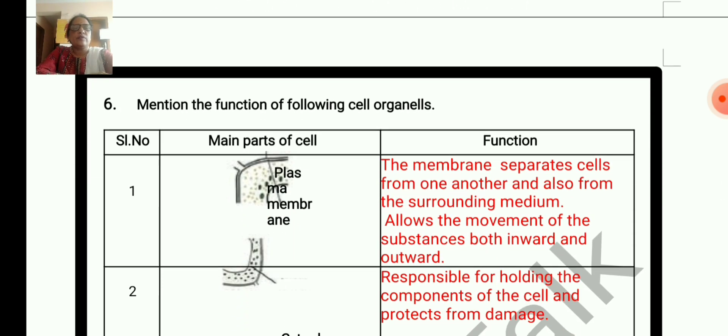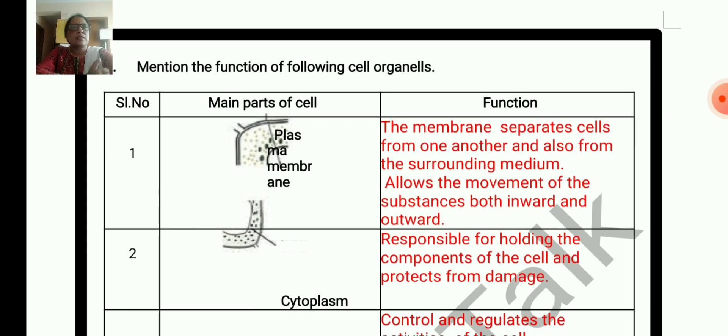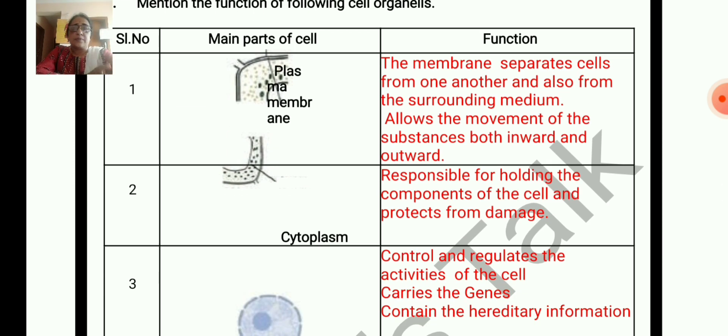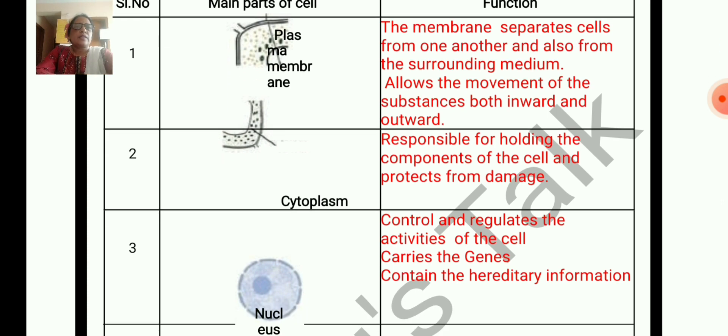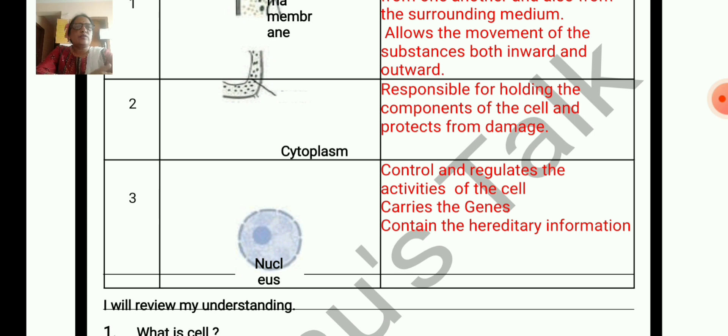Mention the function of following cell organelles. Plasma membrane: the membrane separates cells from one another and from the surrounding medium, allows the movement of substances both inward and outward - gases like carbon dioxide and oxygen, water, and food. Cytoplasm: responsible for holding the components of the cell and protects from damage. Nucleus: controls and regulates the activities of the cell, carries the genes, contains the hereditary information.